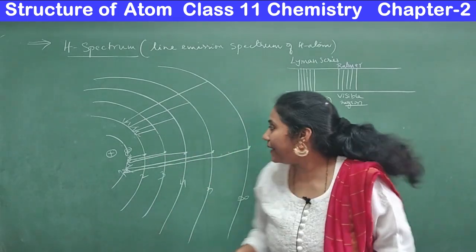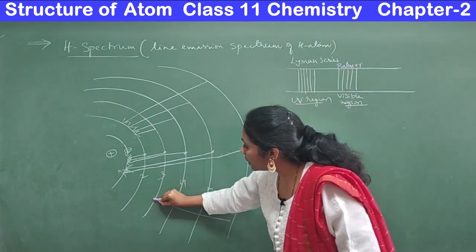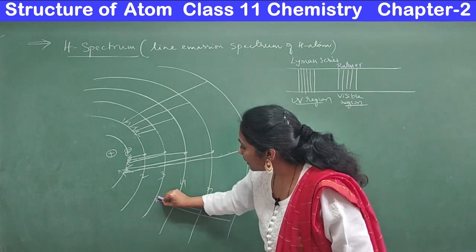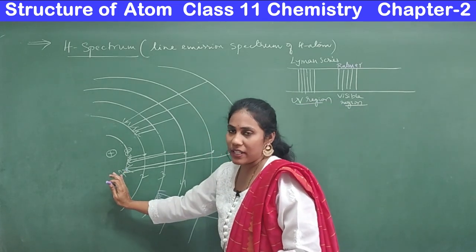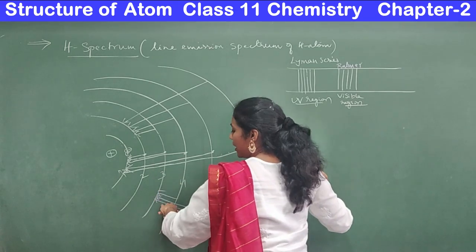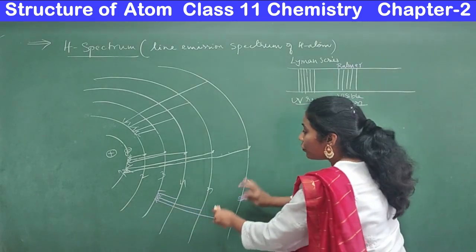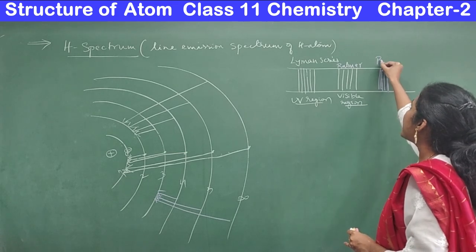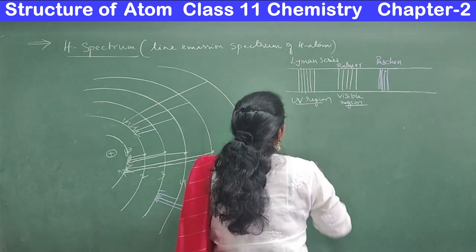Without going directly to the first shell, if the electron goes to the third shell — from infinity it may go to third, from fifth to third, or from fourth to third — and then from the third it will go back to its original shell. From wherever the electron jumps first to the third shell, those transitions involve emission of radiation and those radiations form a group called the Paschen series.